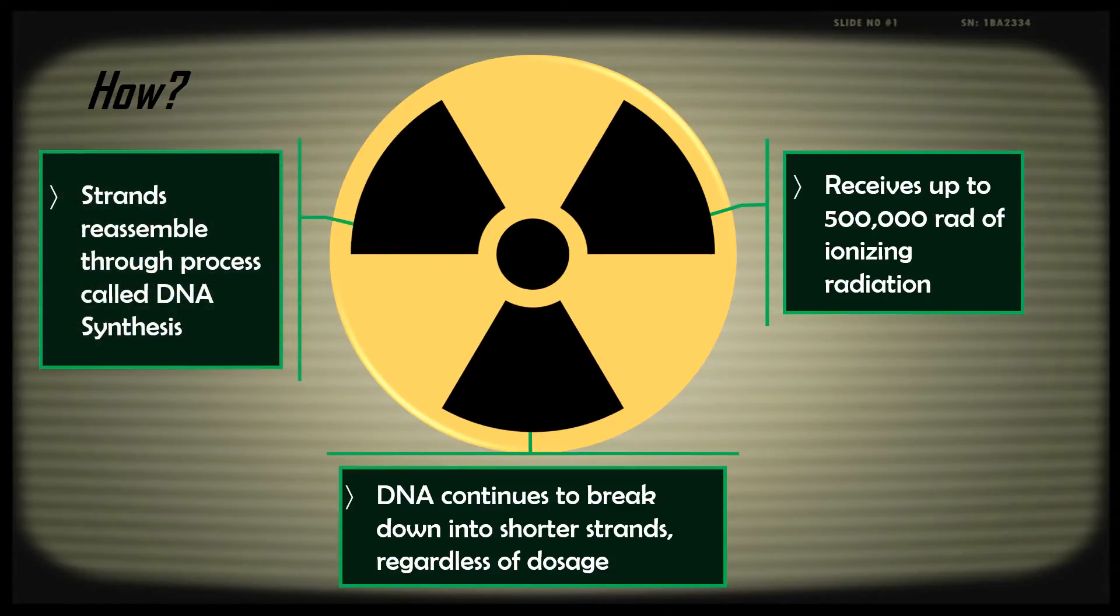So, D. radiodurans can receive up to 500,000 rads of ionizing radiation. The DNA then continues to break down into shorter strands regardless of the radiation dosage, and then the strands reassemble through the process called DNA synthesis, and the microbe is able to recover.